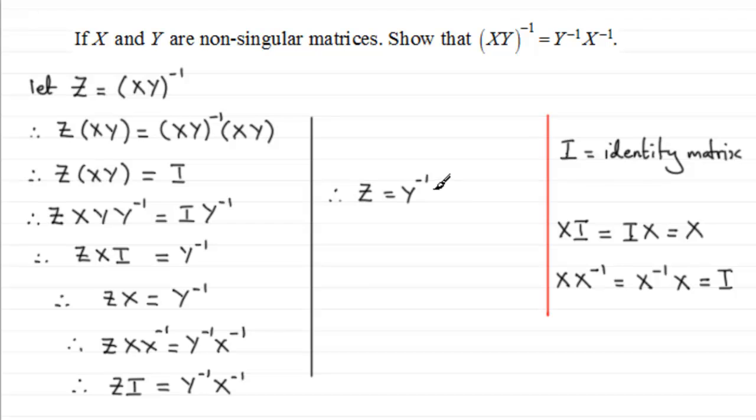So we end up with, therefore, Z equals the inverse of Y multiplied by the inverse of X, the result that we had to show here. Notice though that it's not the inverse of X times the inverse of Y. Matrix multiplication isn't generally commutative, that is, you can't reverse these values around.